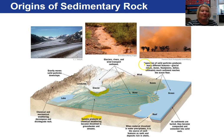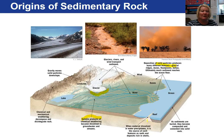Wind can deposit solid particles. When material deposited in the ocean — dissolved material — precipitates under the right conditions, it can produce features such as coral reefs. The ocean is another sedimentary basin where much sediment is deposited. Another example would be dunes in a desert situation.